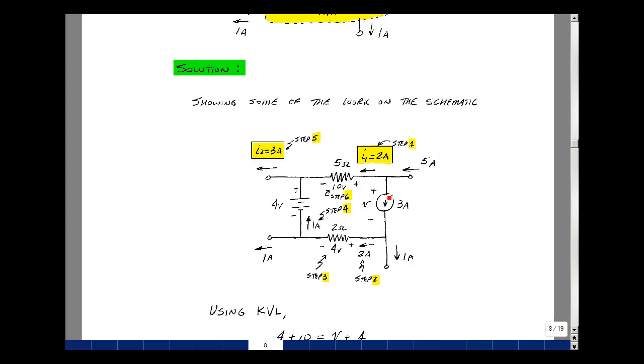Went down over here, did the same thing. I have 3 amps entering, 1 amp leaving, so there must be 2 amps here. 3 is equal to 2 plus 1. That 2 amps flows into 2 ohms, so by Ohm's law I get 2 times 2, or 4 volts.